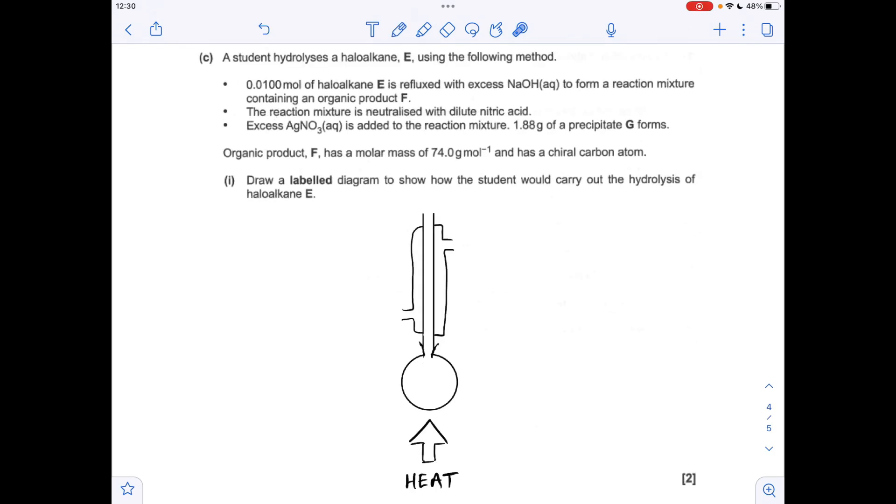Moving on to part C now, so we've got to draw this label diagram to show how the student would carry out this hydrolysis. And we're told that it is refluxed, so it wants reflux apparatus. So let's just label this up. So we've got a flask here. I've drawn a round bottom flask. You could have a pear-shaped flask there if you want. Let's put the chemicals in. Obviously we've got the heat source at the bottom.